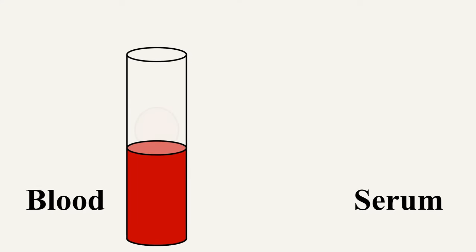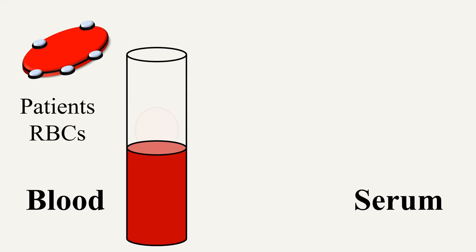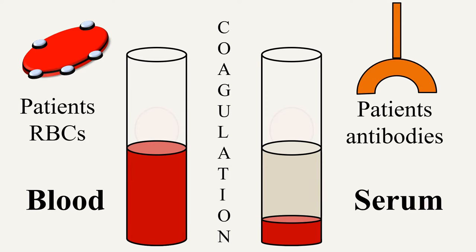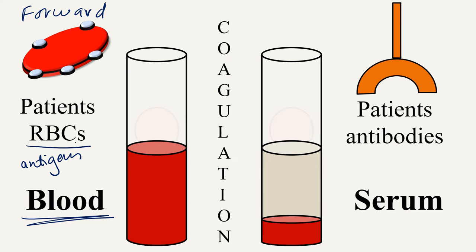The blood sample contains all blood cells and coagulating factors. Thus, if we are using the blood sample, we will have all the RBCs showing the different antigens present on them. However, when you allow the blood sample to coagulate, the clear liquid left behind is known as serum, which is enriched with antibodies. In case of forward typing, we use the blood sample, so we have the antigens on the RBCs, and to check the blood group of the person we add commercially prepared antibodies.